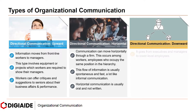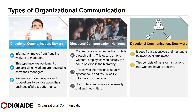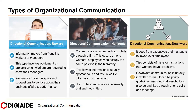And finally, downward directional communication. It goes from executives and managers to lower-level employees, as in a traditional structure. This consists of tasks or instructions that workers have to achieve. Downward communication is usually in written format — it can be policy guidelines, memos, and emails. It can also be oral, through phone calls and meetings.